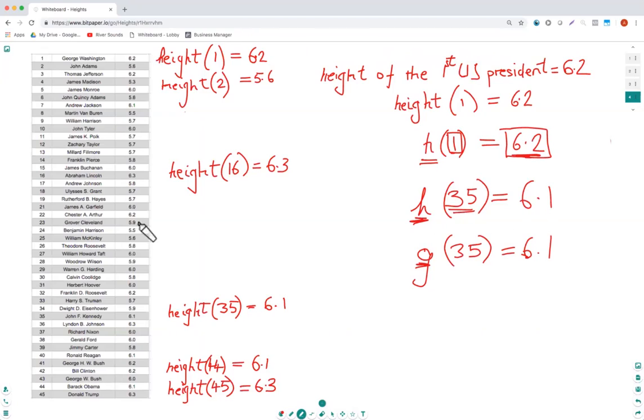Mathematicians like to use the letter f to represent this kind of an idea. f of 35 is equal to 6.1, and they like to call this idea a function.